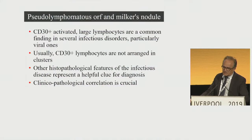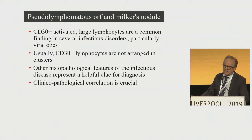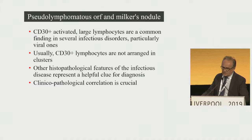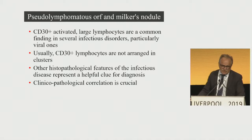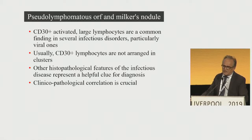CD30-activated large lymphocytes are a common finding in viral infections, particularly in ORF and Milker's nodule. Usually these CD30-positive lymphocytes are not arranged in clusters — this is a good clue to rule out lymphomatoid papulosis or anaplastic large cell lymphoma. Usually, additional histopathologic findings are present in the biopsy, allowing you to make a specific diagnosis. Clinical-pathological correlation is crucial.